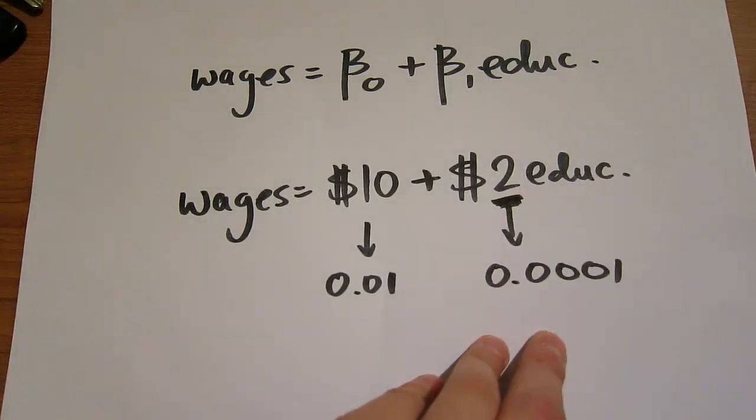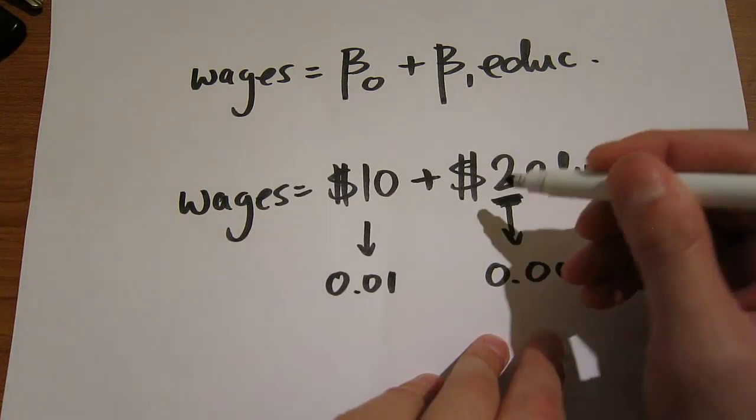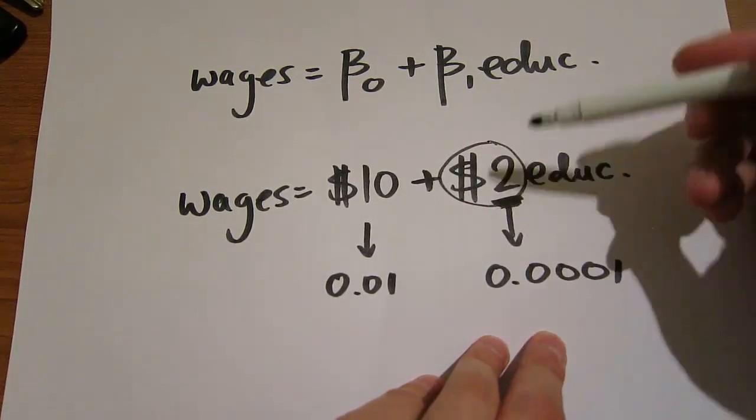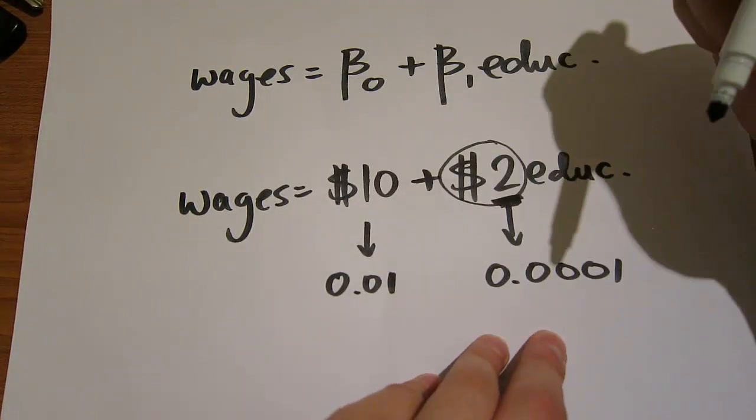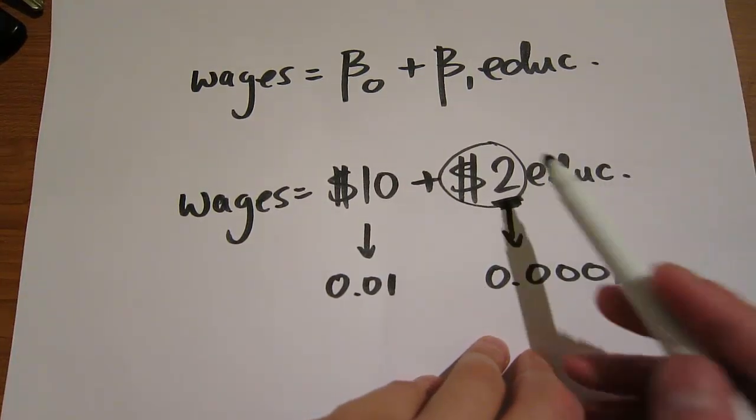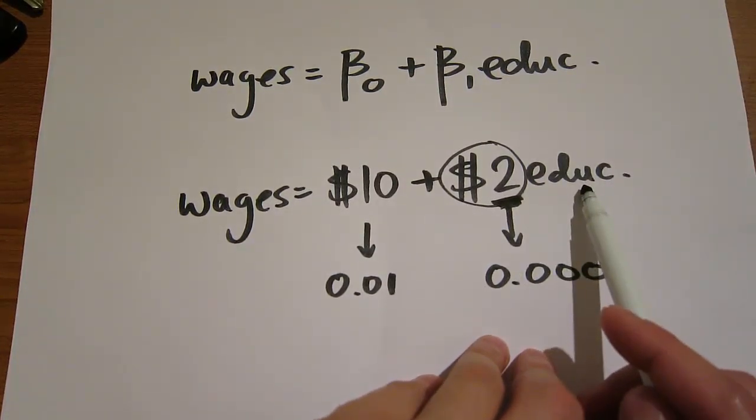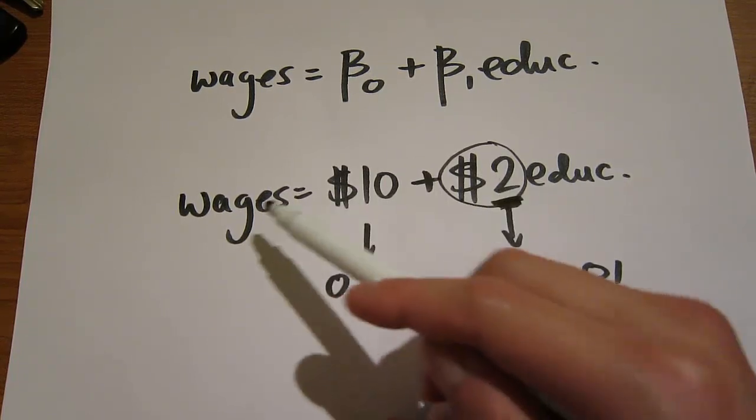This $2 means something; it's not just a random number. Now what's economic significance? Economic significance looks at the size of this number and interprets it in relation to wages. Every year of education will lead to a $2 increase in wages.